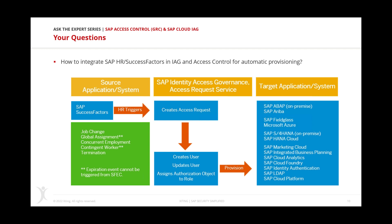If you use the IAG bridge scenario, the SuccessFactors HR trigger would run in Access Control. The graphic here is purely for IAG standalone. If you're just using IAG without Access Control, it's possible. If you use Access Control, it was already possible without IAG. And in the combination, it is obviously also possible.